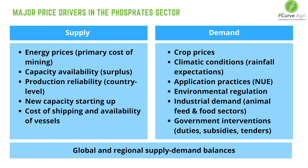Crop prices are also a major driver of fertilizer demand and therefore prices, as is energy on the supply side. The main cost element to mining is energy — fuel for machines. Sulfur, which is the raw material for sulfuric acid to digest the rock, is a derivative of oil refining, and therefore sulfur prices are closely linked to oil and energy prices. Ammonia is also a derivative of hydrocarbons such as natural gas, so a change in energy prices impacts the cost of producing ammonia. All of the inputs into phosphates are strongly linked to energy prices.